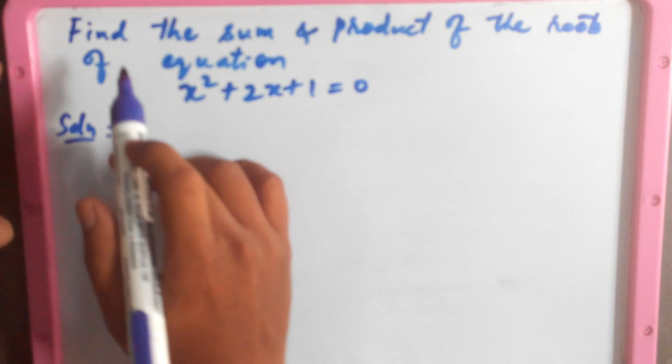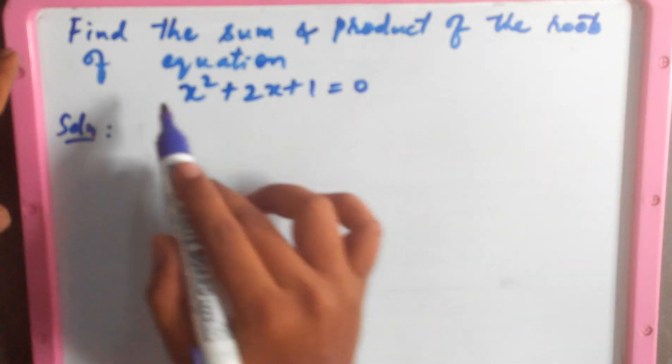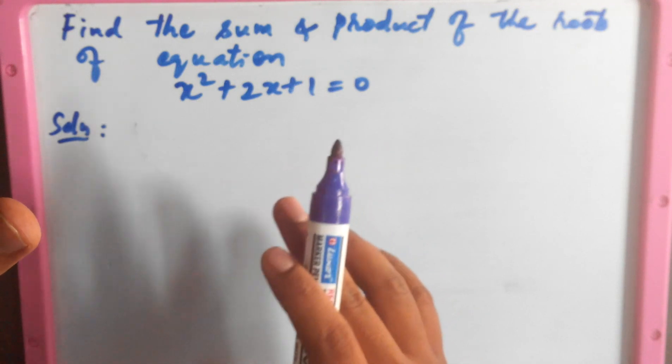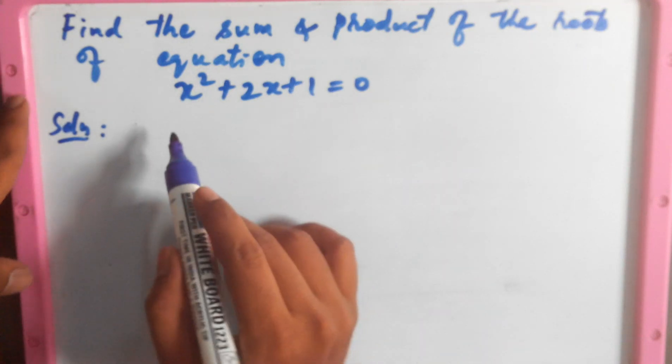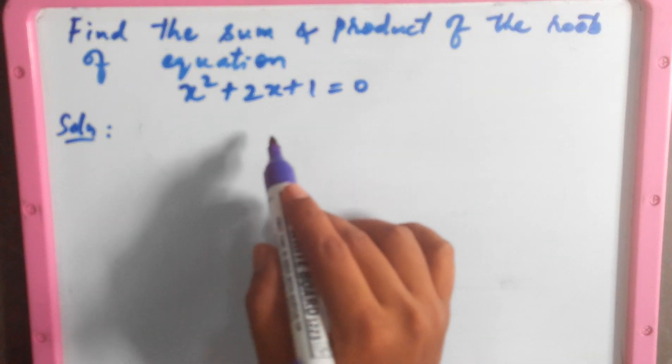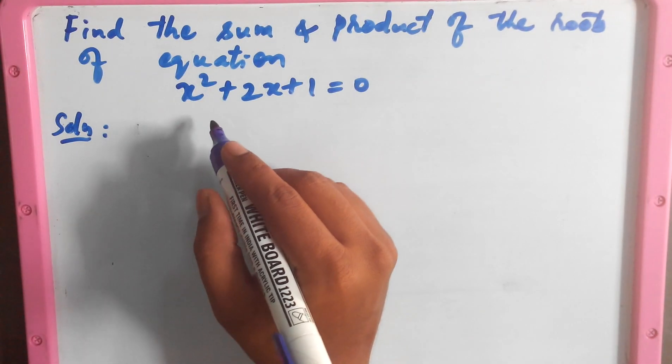Now we are going to find the sum and product of the roots of a quadratic equation. The given equation is x² + 2x + 1 = 0.